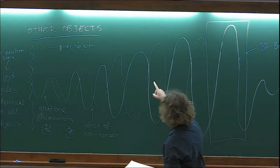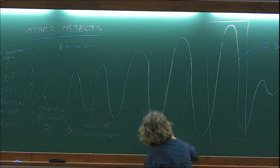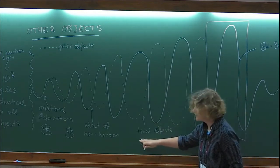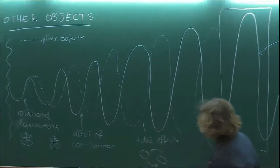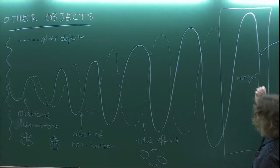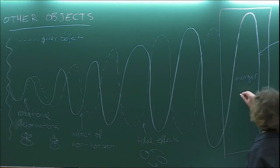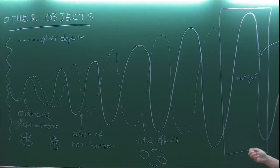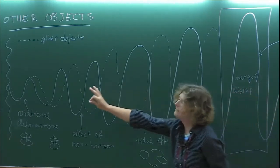At very high frequencies we have tidal effects, because for extended objects there's a variation in the gravitational field across the mass distribution, and they will tidally deform in response to the companion's field. The merger could be very different — for some scalar field configurations you might not form a black hole but instead have some repulsive state, or the tidal effects become so strong that the objects are tidally disrupted. These are the most dramatic changes, much more dramatic than the small dephasing in the inspiral.